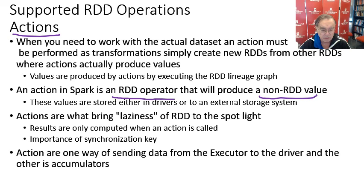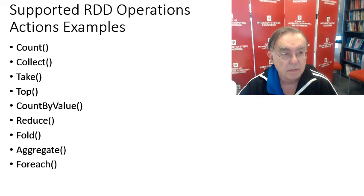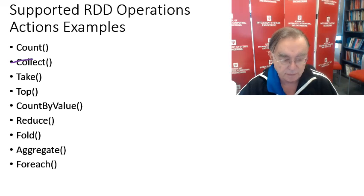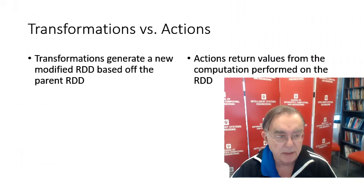Actions are only invoked when they're needed, and that implies some synchronization which Spark can keep track of. Some actions include: count, collect, take, top, count by value, reduce, fold, aggregate, for each — these are standard global operations.